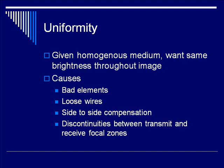If you look and see a non-uniformity, you might see a vertical stripe across the screen where the brightness is lower, or a horizontal band across the screen where the brightness is lower. Those kinds of non-uniformities require you to call the maintenance team for your ultrasound machines. Some causes for non-uniformity include a bad element in the piezoelectric array, a loose wire from one of those elements back to the transducer, problems with side-to-side compensation, and discontinuities between the transmit and receive focal zones.